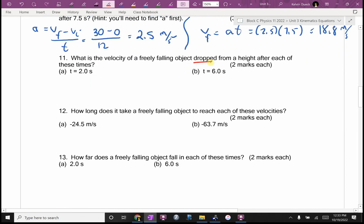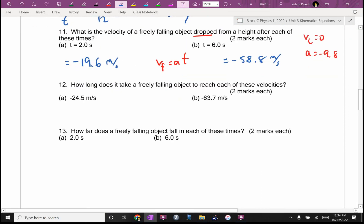Number 11, they said dropped, so I can assume that VI is zero. Dropped, A is negative 9.8. I think for both of these, I'm just going to use VF equals AT. Negative 19.6 meters per second and 6 times 9.8, negative 58.8 meters per second. Two marks each. I guess I would give you one mark if I saw that, and then one mark for the answer.